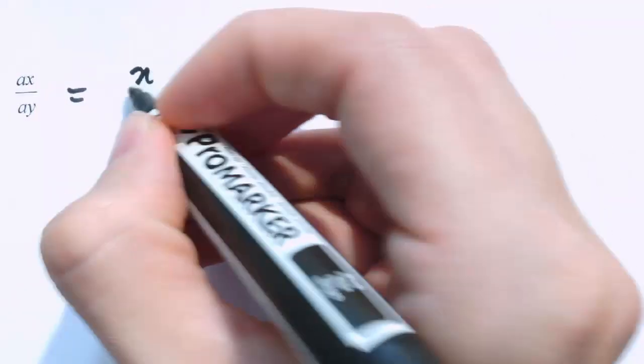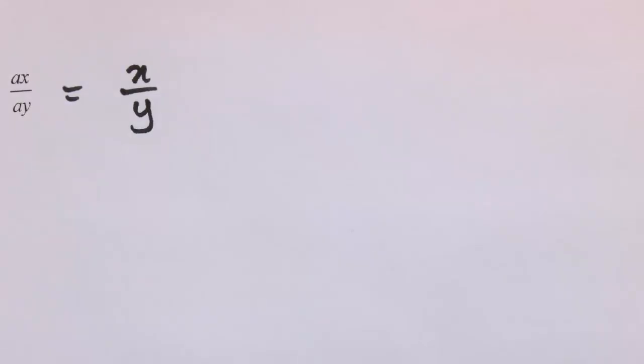Here's another example: we've got a times x divided by a times y. Top and bottom share a factor of a, so I can divide the top by a to leave x, and the bottom by a to leave y. So the answer is x over y.